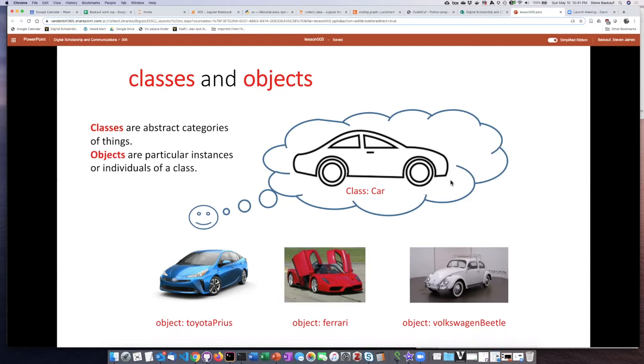Classes are basically abstract categories of things. So in this example, the abstract category is the class car, but we can have objects that are individuals of that class or particular instances like my Toyota Prius or someone else's Ferrari and so forth.